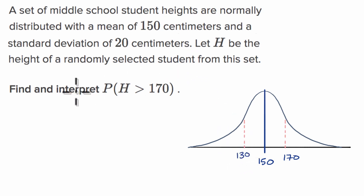And we want the probability of, if we randomly select from these middle school students, what's the probability that the height is greater than 170? So that's going to be this area under this normal distribution curve. It's going to be that area. So how can we figure that out?